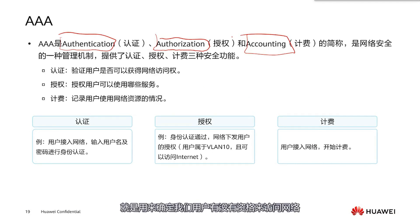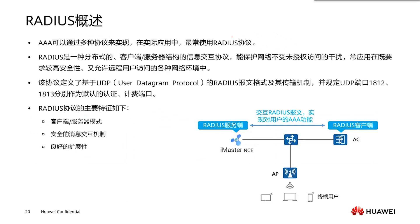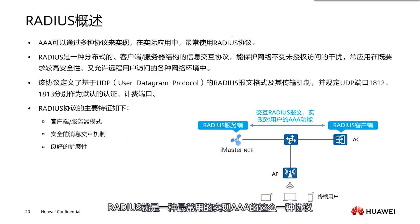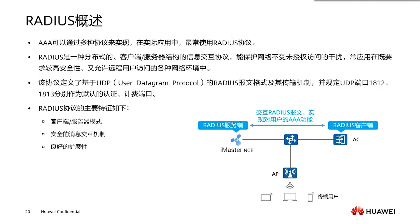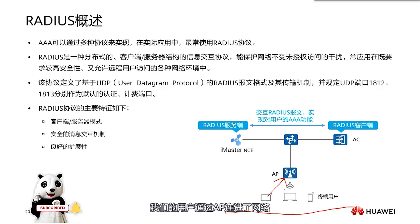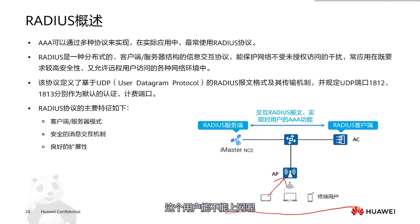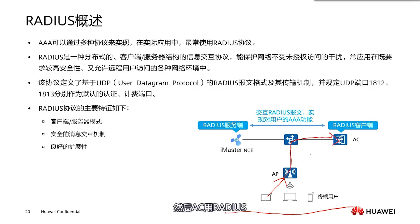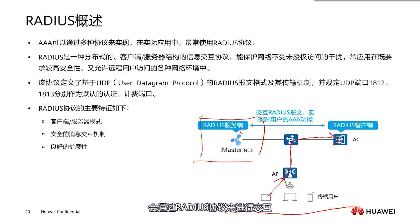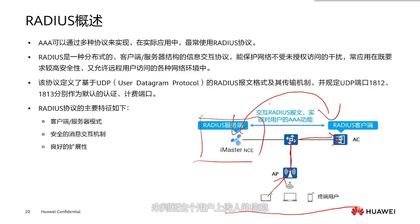3A is used to determine if our users are eligible to access the network. RADIUS is one of the most commonly used protocols to implement 3A. Looking at this topology: our users connect to the network through the AP. The user sends information from the switch to the AC, and then the AC uses the RADIUS protocol to interact with our RADIUS server to verify this user and evaluate whether they are eligible to connect to our network.